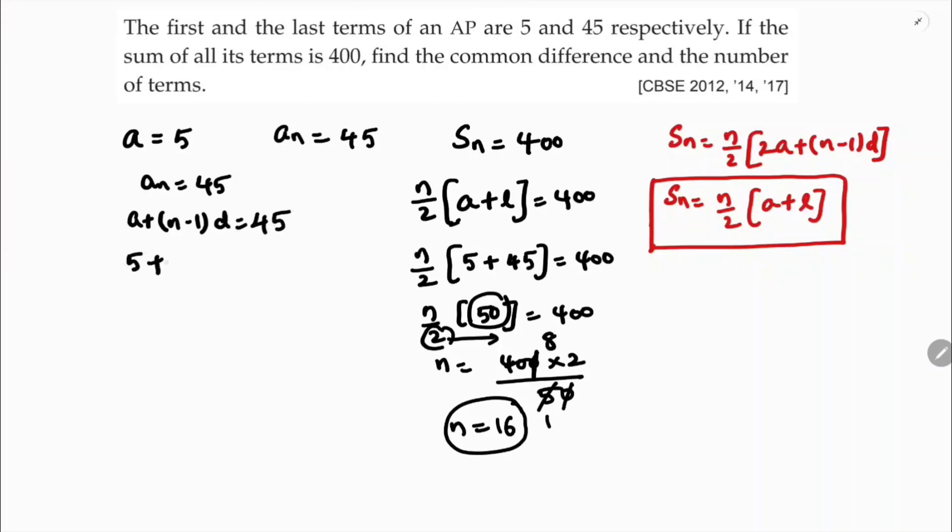a is 5 and n is 16. So 5 plus 16 minus 1 into d equals 45. 5 plus 15d equals 45. 15d equals 45 minus 5. 15d equals 40.